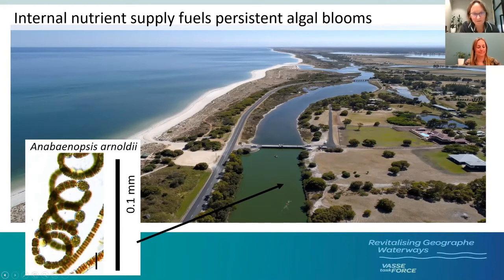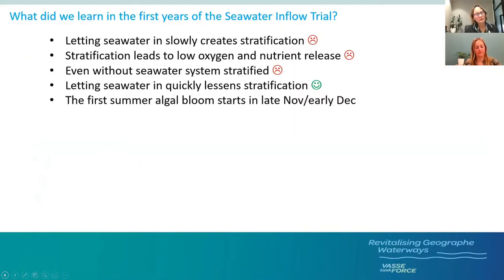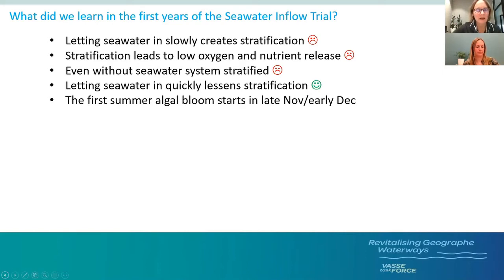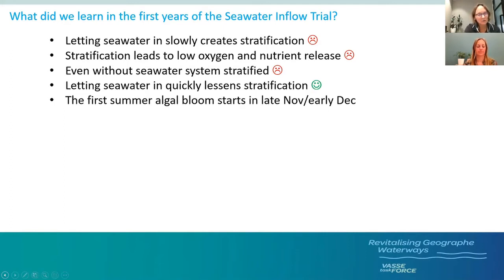To summarise the first three years of learnings: letting seawater in slowly creates stratification, which leads to low oxygen in bottom waters and drives nutrient release. Even when we don't let seawater in, the Vasse channel stratifies — it has a really strong tendency to stratify. We can minimize some of the stratification by letting seawater in quickly. Also, the first algal blooms start in late November and early December.